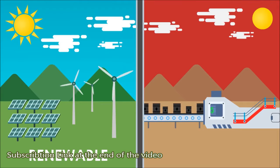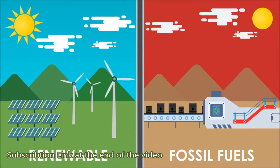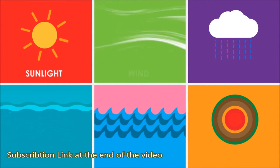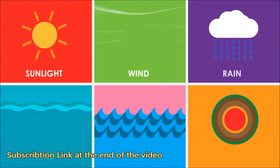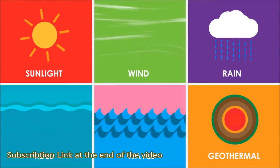Renewable energy comes from resources which naturally replenish in our lifetime, whereas fossil fuels are a one-time use resource in the human time scale. Resources for renewable energy include sunlight, wind, rain, tides, waves, and geothermal heat.